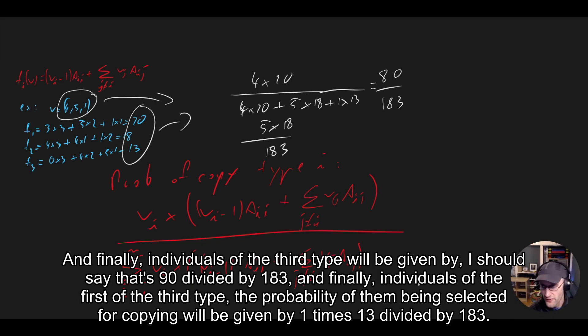And finally, individuals of the third type, the probability of them being selected for copying will be given by 1 times 13 divided by 183.